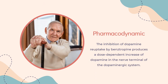Pharmacodynamics. The inhibition of dopamine reuptake by benztropine produces a dose-dependent increase of dopamine in the nerve terminal of the dopaminergic system. Clinically, the activity of benztropine is observed after 1-2 hours of oral administration and after a few minutes of intramuscular administration, with a lasting effect of about 24 hours. Reports have indicated that benztropine has a very large sedative effect. The antihistaminic effect of benztropine is very similar to the effect found in pyrolamine, and the anticholinergic activity was found to be equal to atropine ex vivo and about 50% activity in vivo.